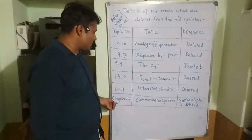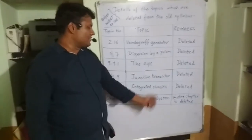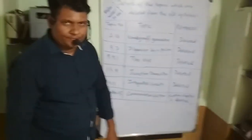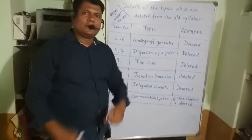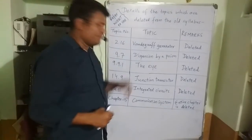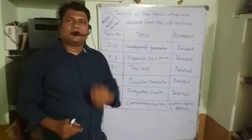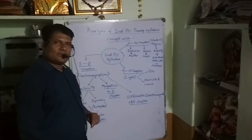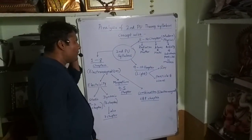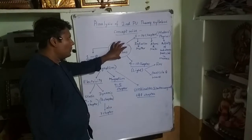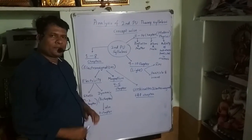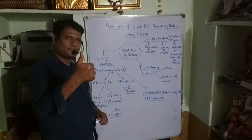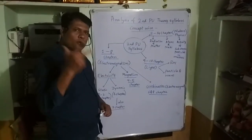From Chapter 15, Communication Systems, the entire chapter has been deleted. Now let me do an analysis of the second PUC theory syllabus concept-wise. The whole syllabus of second PUC is divided into three parts: first is Electromagnetism, second is Light, and third is Modern Physics.